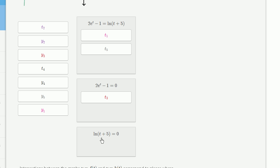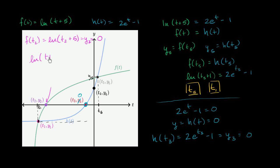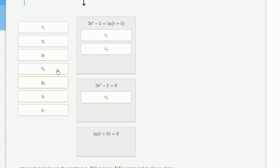For the last bucket, we do the same thing for f of t — the natural log of t plus 5. When does it intersect the t-axis? We can see that f of t sub 2 equals the natural log of t sub 2 plus 5, which equals y sub 2, which equals 0. So t sub 2 satisfies natural log of t plus 5 equals 0, and it goes into the last bucket.